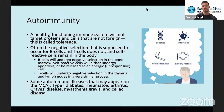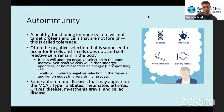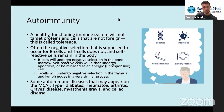Some autoimmune diseases that may appear on the MCAT are type 1 diabetes, rheumatoid arthritis, Graves' disease, myasthenia gravis, and celiac disease. If you're interested in those, you can look them up on your own time. Type 1 diabetes is usually the one that comes up the most. You'll also see other rare diseases come up — I've seen vitiligo on some practice materials, which is that autoimmune pigment disorder. They're all pretty interesting, honestly.